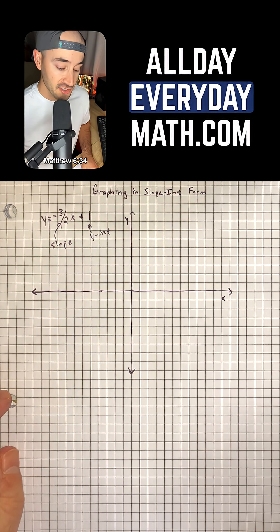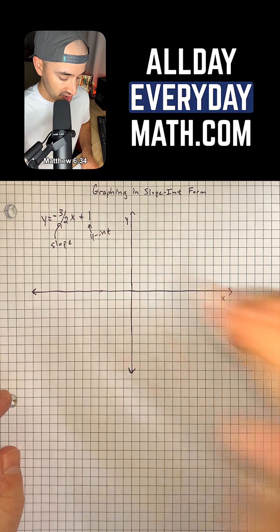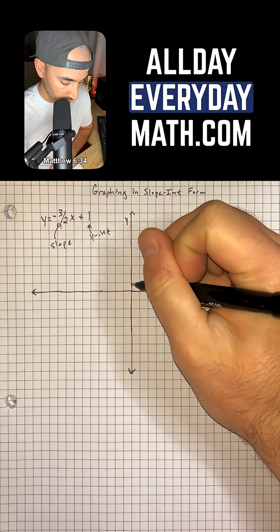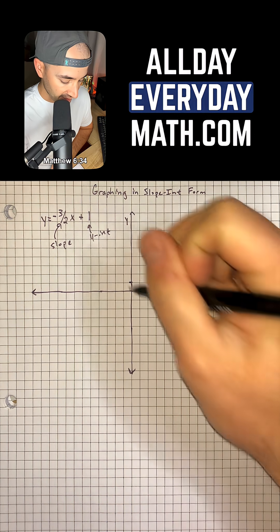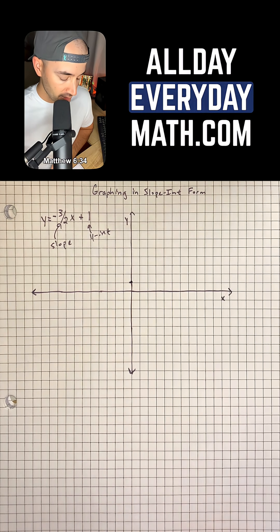In order to graph this equation, we're first going to start with the y-intercept. Because it's positive 1, we're going to go up 1 on the y-axis and put a point there.